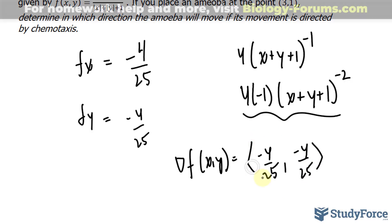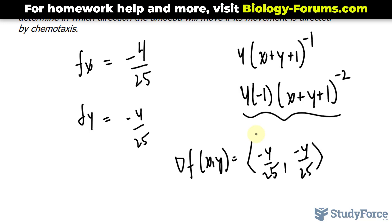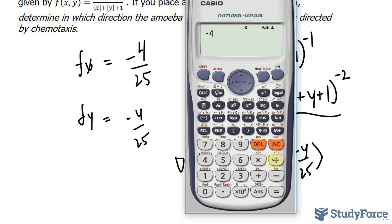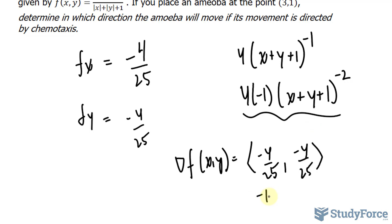And this direction is where the amoeba moves the fastest. That's approximately equal to negative 0.16 and negative 0.16. So in the direction of negative 0.16 and negative 0.16 is where it's going to move the fastest.